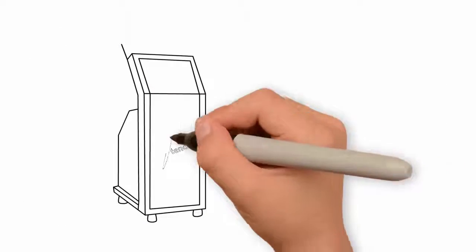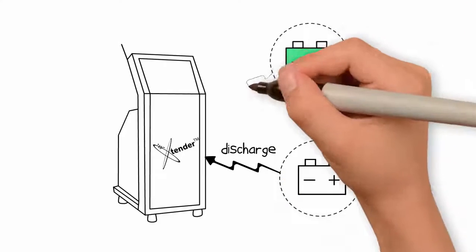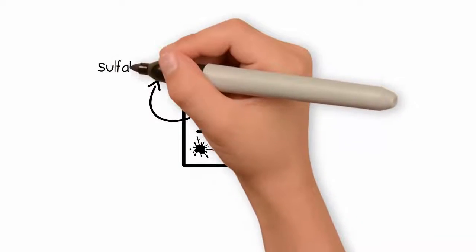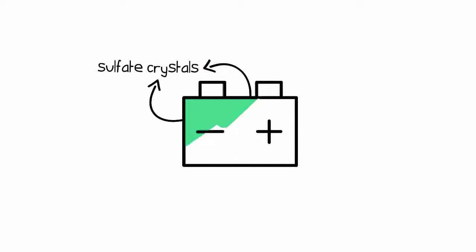This all-in-one machine combines discharge and restoration cycles with a high frequency pulsation to regenerate and equalize batteries, softening and dissolving the extremely hard sulfate crystals which cause capacity loss.